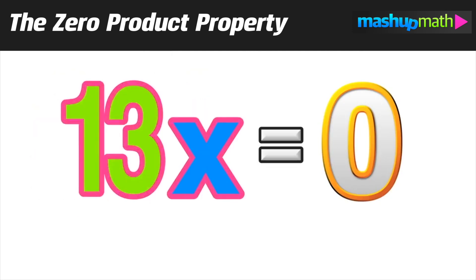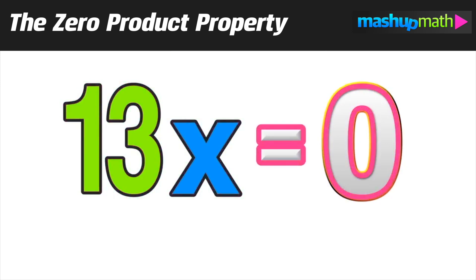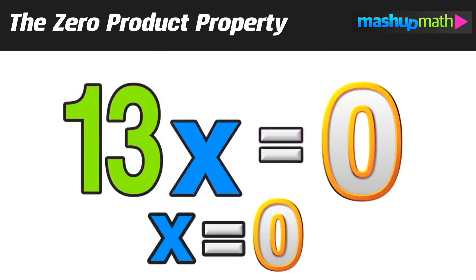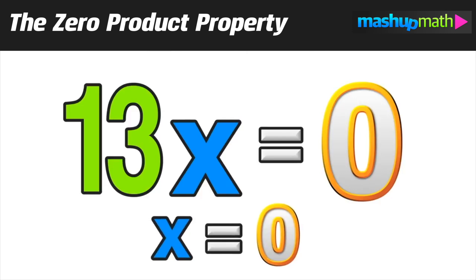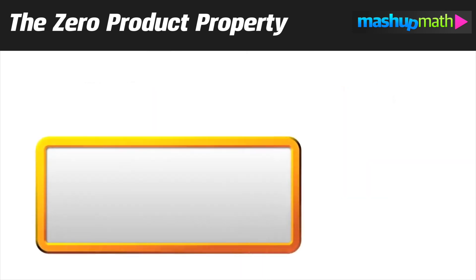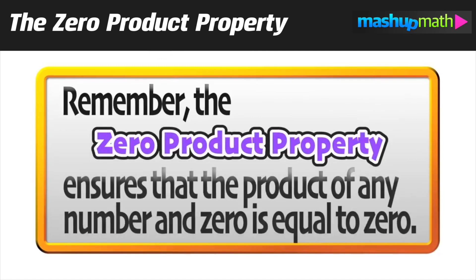So, if we ever see something like 13x or 13 times x equals zero, we know by the zero product property that x has to equal zero. So, just remember that the zero product property ensures that the product of any number and zero is always equal to zero.